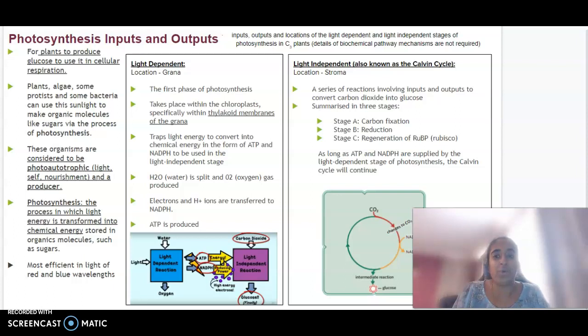Photosynthesis is the way that plants are able to produce glucose and use that glucose in cellular respiration. Plants, algae, some protists and some bacteria all use sunlight to make sugars. These organisms are called photoautotrophic, and it's the process in which light energy captured from the sun is transformed into chemical energy in the form of glucose. It's most efficient in wavelengths of red and blue.